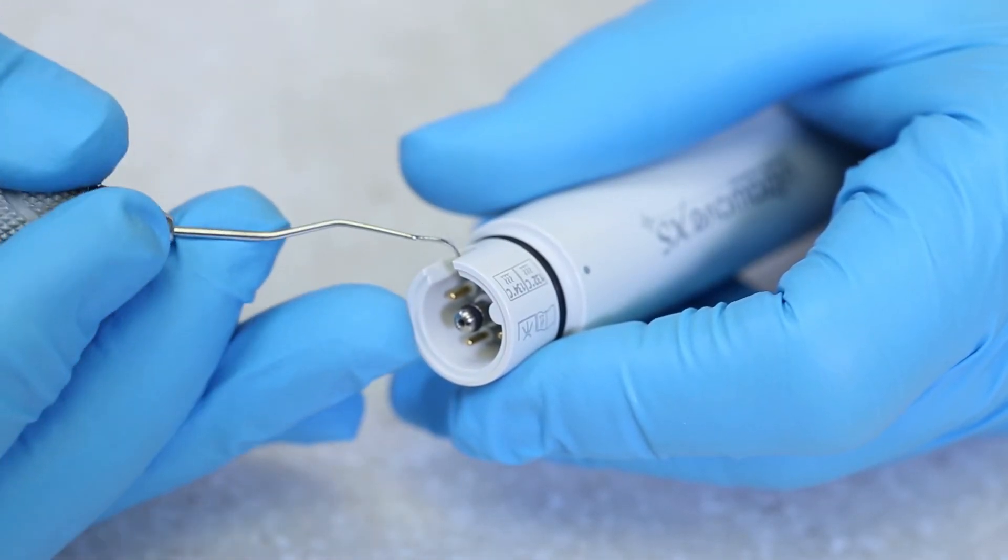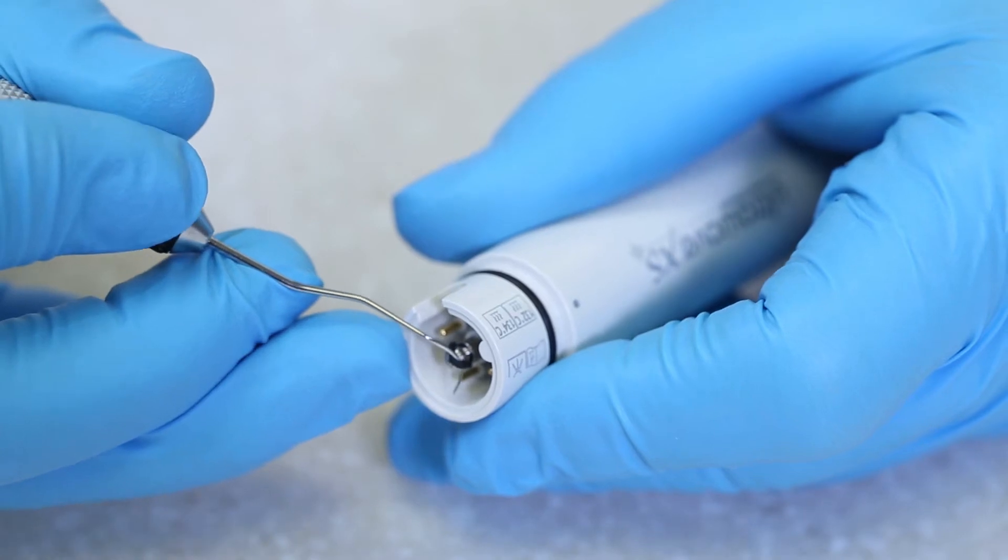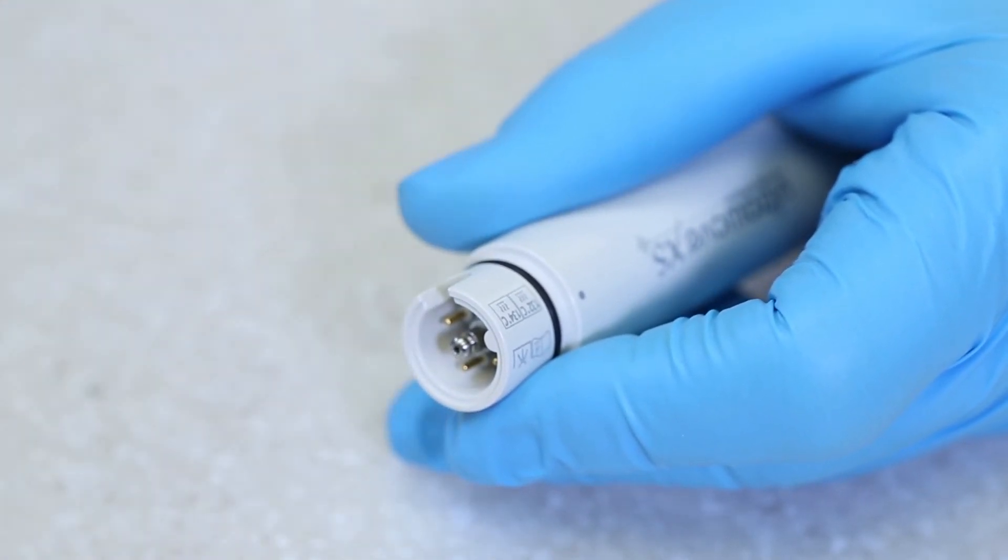Begin by removing the worn O-ring from the groove of the handpiece water connector by using an Explorer or a thin pair of pliers.